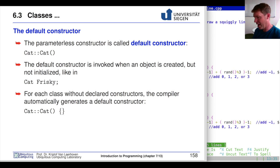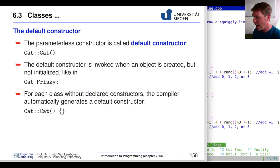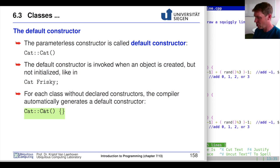If you don't supply a default constructor, one is automatically constructed nonetheless. You could instantiate Frisky as type cat without any parameters, just like you declare an integer 'i'. In the background, if the developer did not supply a default constructor, the compiler would add an empty member function with the same name as the class, no arguments, and no statements.